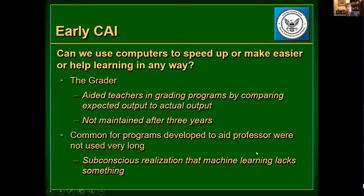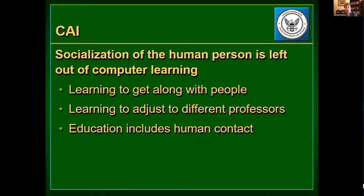What's lacking really is the socialization aspect — the humanity is left out of the equation when computers are used. One of the important things Hamming says is that part of the educational experience is learning how to get along with people, learning how to work together, learning to respect other people's ideas, and learning to adjust to different methods of teaching and different professors. Education must have this human contact. Especially in the military, you always have to sell your ideas to your subordinates, your peers, and your superiors — so you need this socialization aspect as it relates to education.